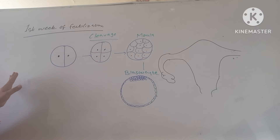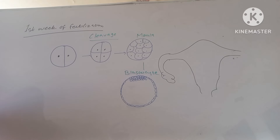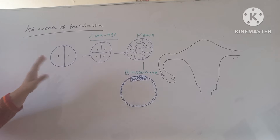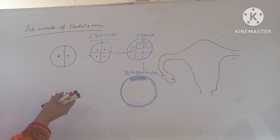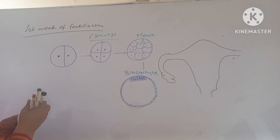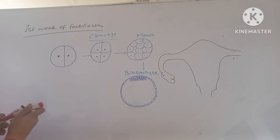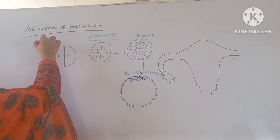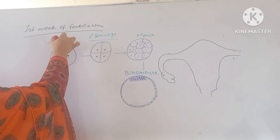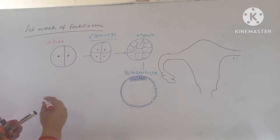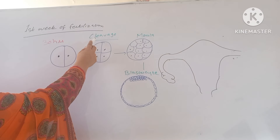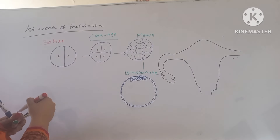Before studying this lecture, you should undergo the thorough reading of the last lecture. Now I will tell you the remaining stages after the fertilization. When the zygote is formed, then 30 hours after fertilization, a process of mitotic division starts, which is known as the cleavage.